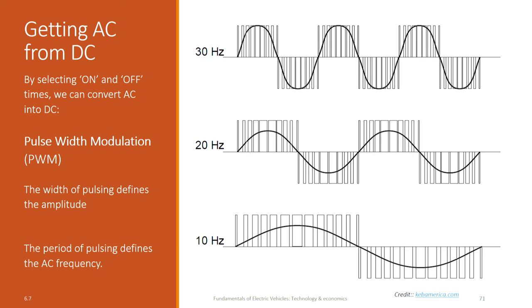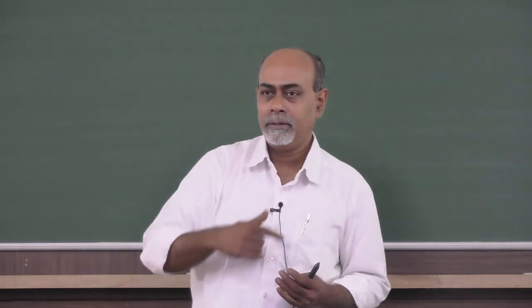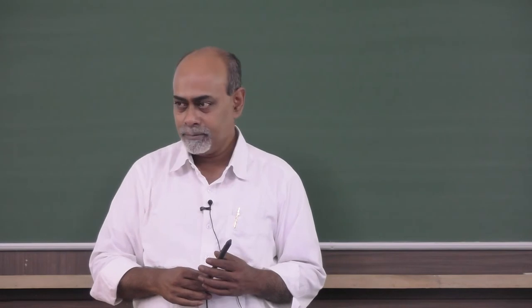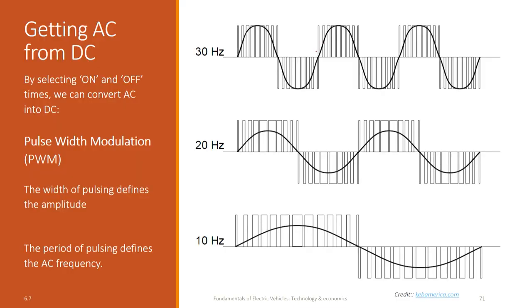You see that if I have a DC source like a battery, I can get AC current of my choice as long as the peak is not more than the capacity of the battery. That is another important point I want you to note. I cannot get a wave which is like this because the battery will simply not give. Even if I keep it on 100 percent of the time, I will only get up to here. So what will happen if I try to do that is it will go up to there and then it will flatten and then come.